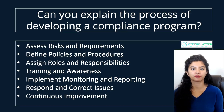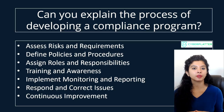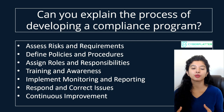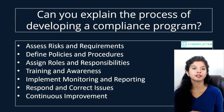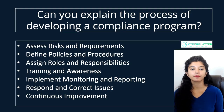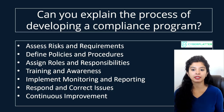The next part is continuous improvement — regularly review and update the program to stay aligned with regulations, and learn from audits, incidents, and industry best practices. For example, conduct an annual HIPAA program review to incorporate new guidance from the Department of Health and Human Services. In short, a compliance program is developed by assessing risks, creating policies, assigning responsibilities, training employees, monitoring adherence, addressing issues, and continuously improving.